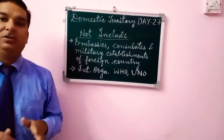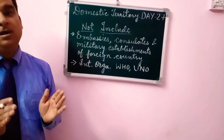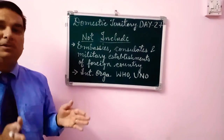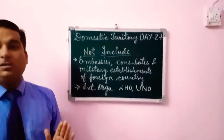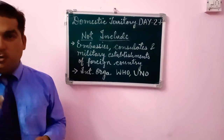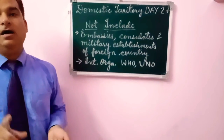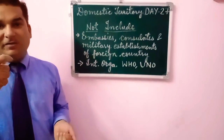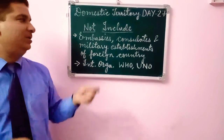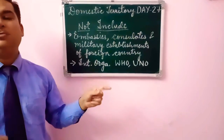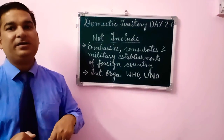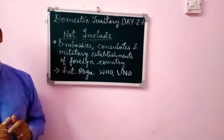The Japanese embassy is located in India, but we do not include it in India's Domestic Territory. It will be included in the Domestic Territory of Japan only. There are two things we need to follow: owner and operation. If we can identify the owner and the operation of the embassies, consulates, or military establishments, we can easily classify whether it belongs to our Domestic Territory or a foreign country's Domestic Territory.